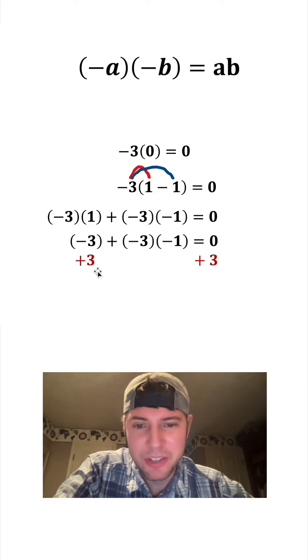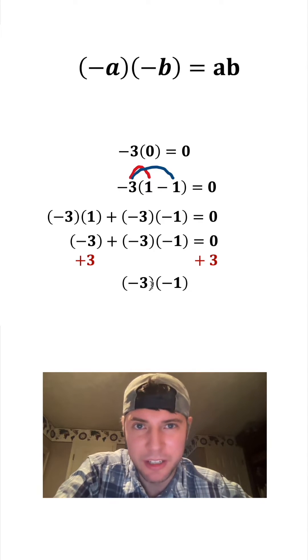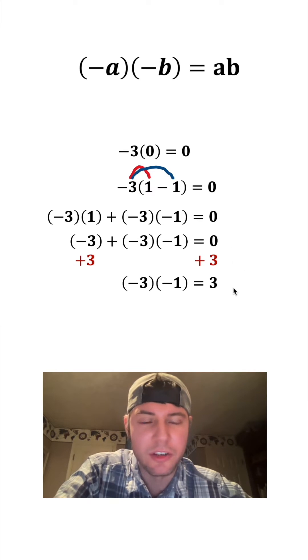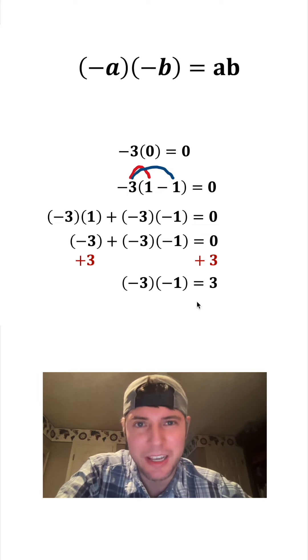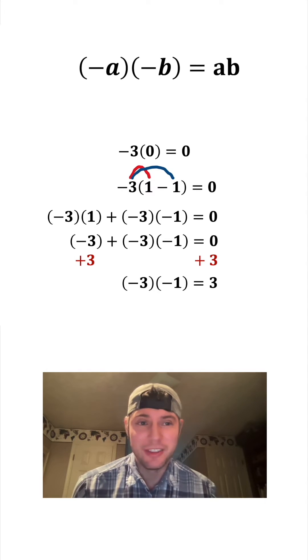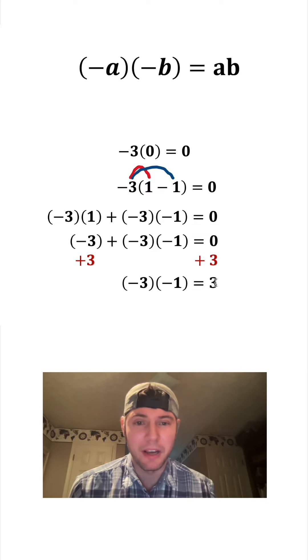Now let's add 3 to both sides. These two things will cancel each other out, giving us negative 3 times negative 1 on the left-hand side. And this right-hand side is just going to be 3. And now we can see negative 3 times negative 1 is positive 3. So a negative times a negative was a positive. This is cool. This shows that a negative times a negative is a positive.